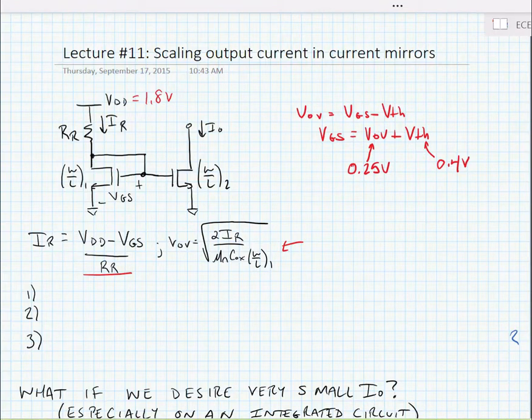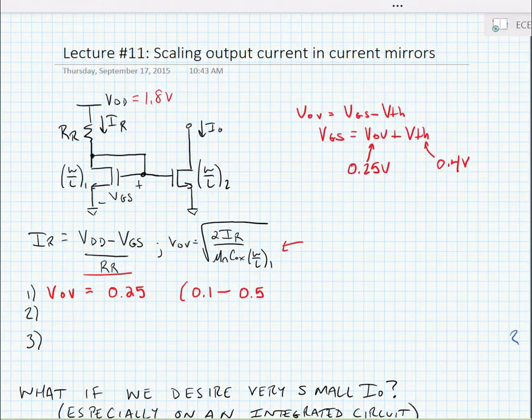So we just said that typically we're going to want to set VOV equal to some value like a quarter of a volt. So typically we're going to set this somewhere between 0.1 and 0.5 volts.